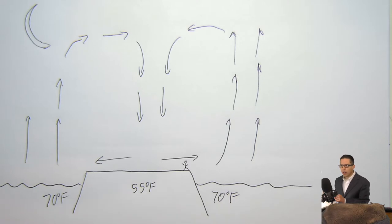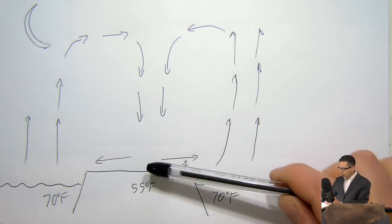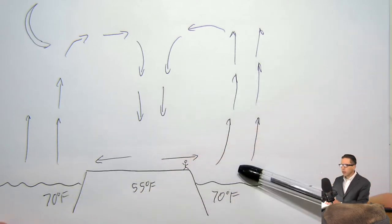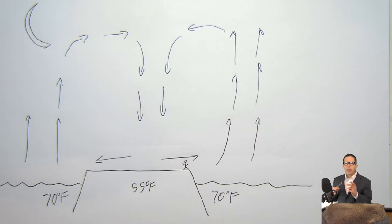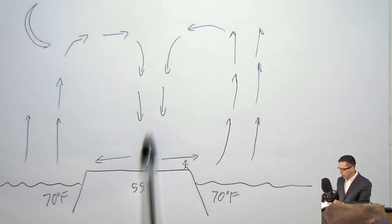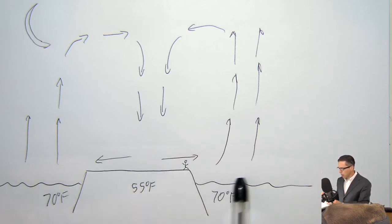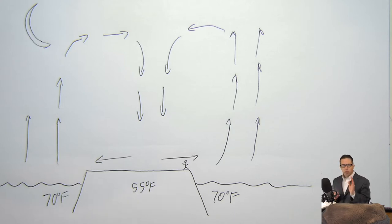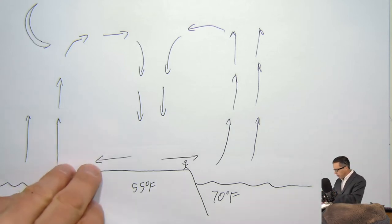In the daytime, we had air rising because the island was warmer than the air around it. At nighttime, we have air sinking over the island and air rising on either side of it. The circulation exactly flipped. Let's extend this idea.